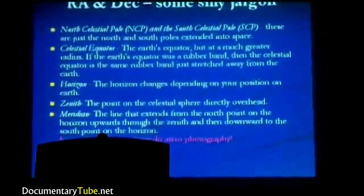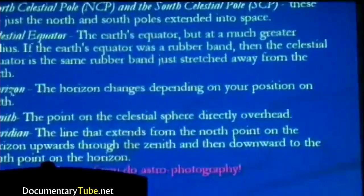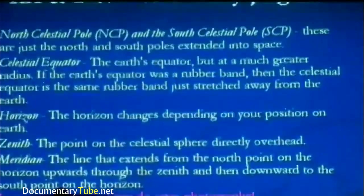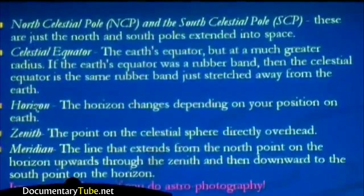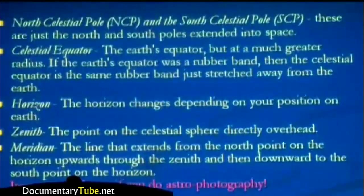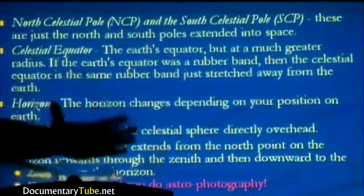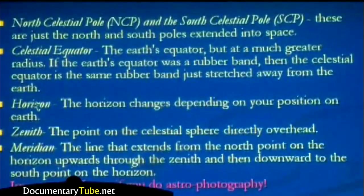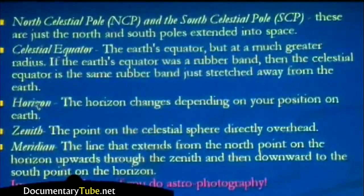Right ascension and declination — some terminology. The North Celestial Pole, or NCP, and the South Celestial Pole, or SCP, are just the North and South Poles extended into space. The celestial equator is the Earth's equator but at a much greater radius. If the Earth's equator was a rubber band, you could think of it being elastic — the celestial equator is the same rubber band, just stretched away from the Earth. So imagine a plane slicing through the Earth's equator and extending into space. The horizon obviously changes depending on your position on the Earth, so the stars we see in North America may be very different from the stars seen in Australia.